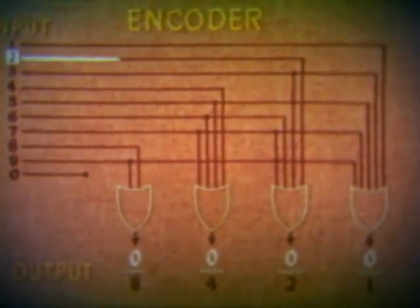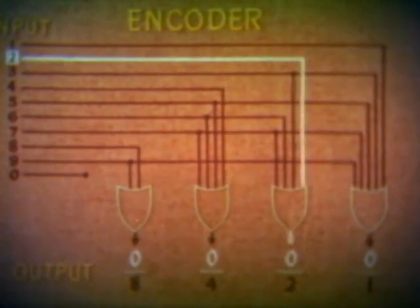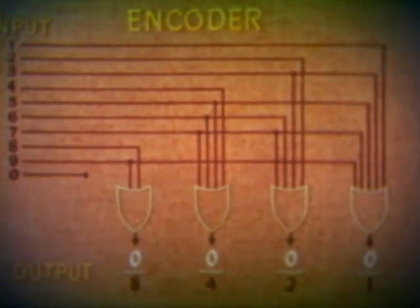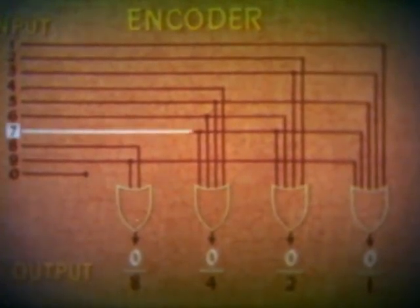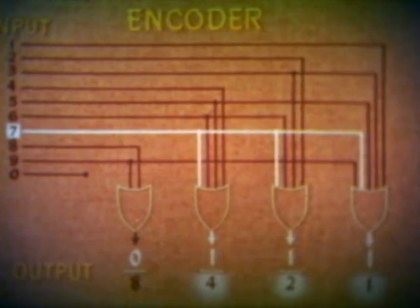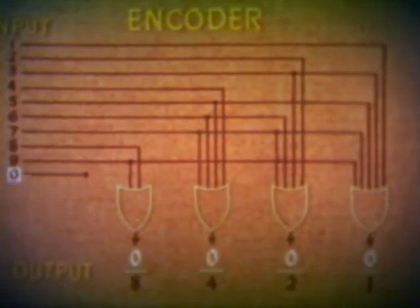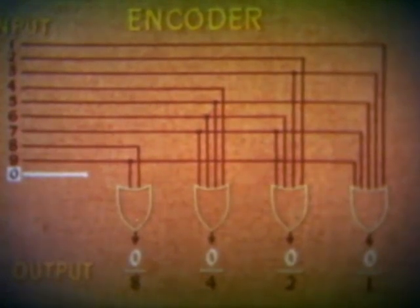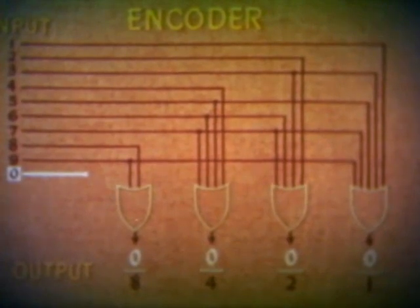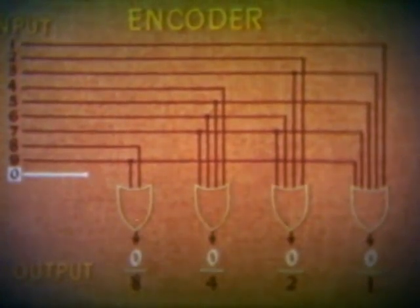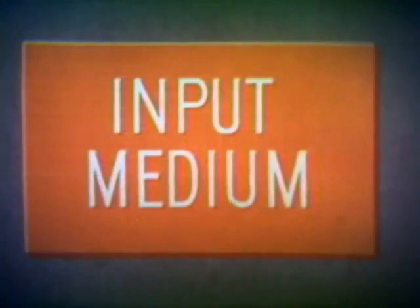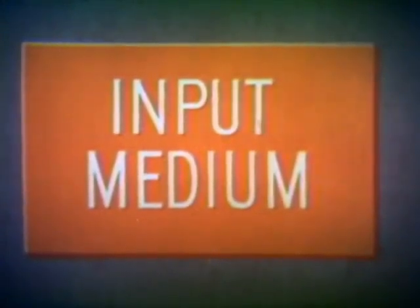Two, for example, is encoded as 0010. Seven comes through this way. Zero input does not have to go through the gates — the output will be 0000 when there is zero input. The problem information, instructions, and data is carried by the input medium.